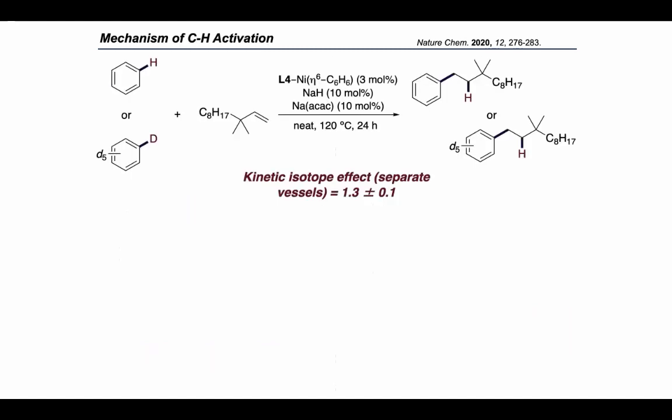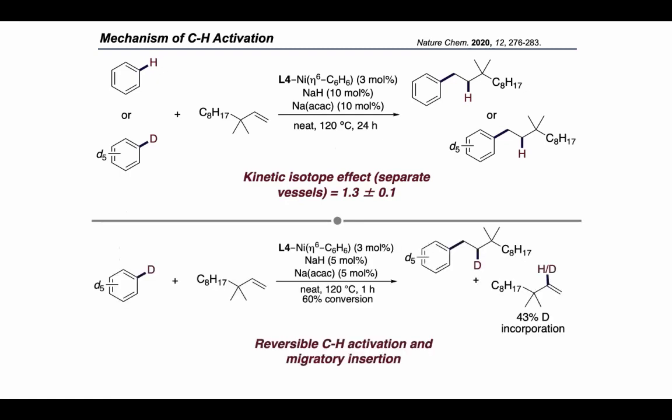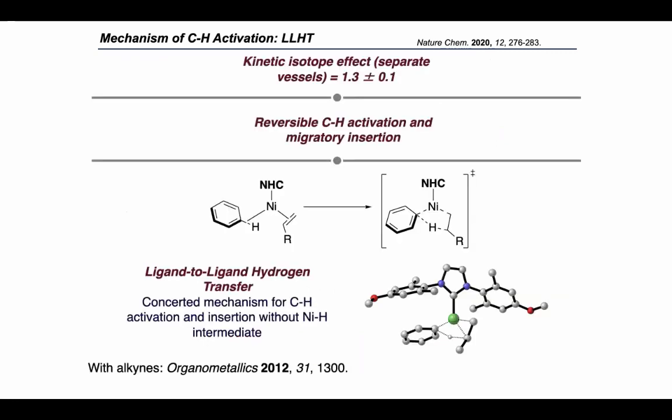To study the mechanism of the C–H activation, we conducted a kinetic isotope effect experiment and found a KIE of 1.3. This small value indicates that the C–H activation event occurs before the rate-limiting step. We also stopped the reaction of deuterated arene at partial conversion and found that there was deuterium incorporation into the unreacted alkene starting material. This tells us that the process involving C–H activation and migratory insertion is a reversible process. Finally, we used density functional theory to model the lowest energy pathway for the C–H activation and found that it occurs by a unique mechanism called ligand-to-ligand hydrogen atom transfer, or LLHT. This is a concerted transfer of the hydrogen atom of a bound arene ligand into the double bond of a bound alkene ligand.